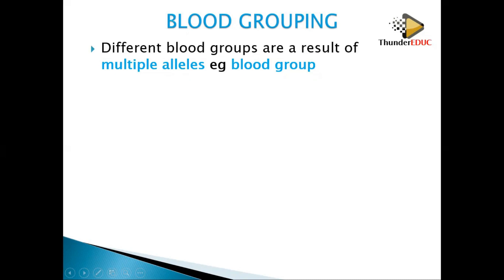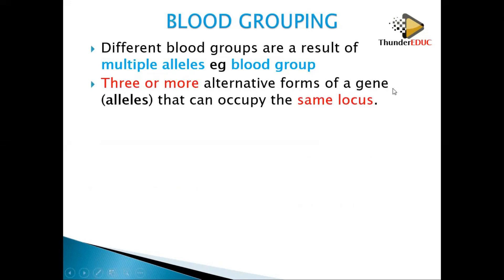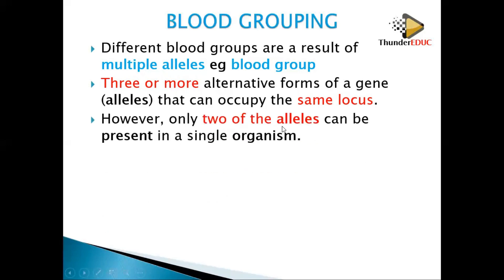When you say multiple alleles, it means more than two. Blood groups are controlled by multiple alleles — three or more alternative forms of a gene that can occupy the same locus. The locus is the location of the gene on the chromosome, so it is the same location but with many different alleles possible.